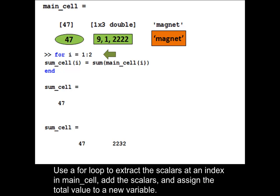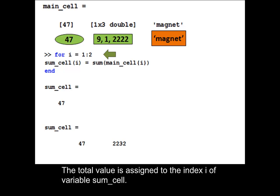Use a for loop to extract the scalars at an index in main_cell. Add the scalars and assign the total value to a new variable. The total value is assigned to the index i of variable sum_cell.